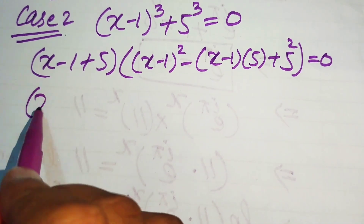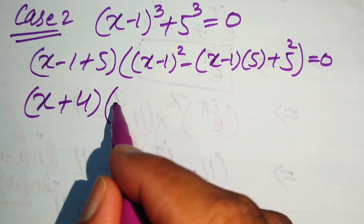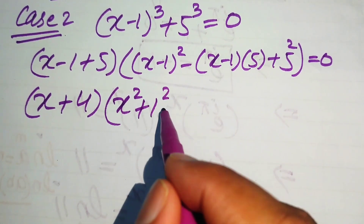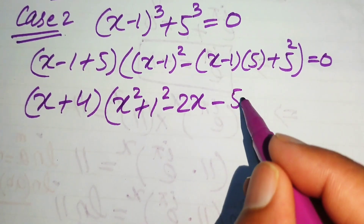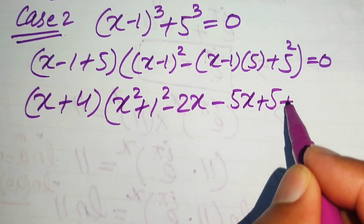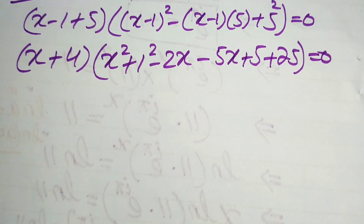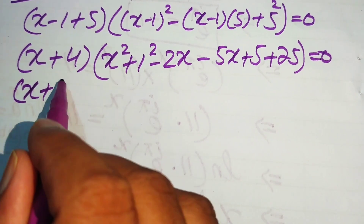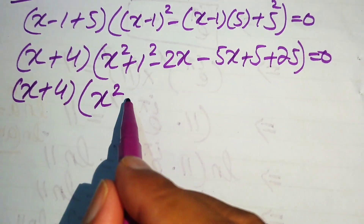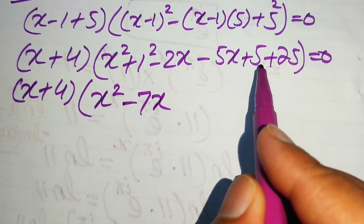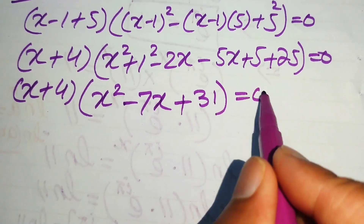Substituting, x minus 1 plus 5 simplifies to x plus 4. Expanding the quadratic factor: (x minus 1) squared gives x squared plus 1 minus 2x, and multiplying 5 through gives minus 5x plus 5, and 5 squared is 25. Collecting like terms: minus 2x minus 5x gives minus 7x, and 25 plus 5 plus 1 gives 31. So the expression is (x plus 4)(x squared minus 7x plus 31) equals 0.